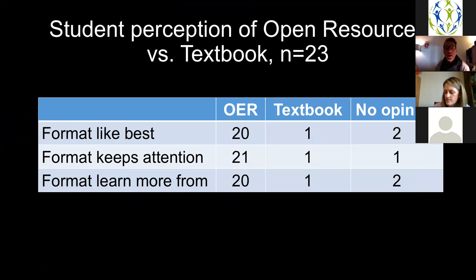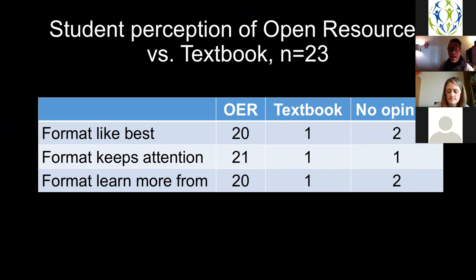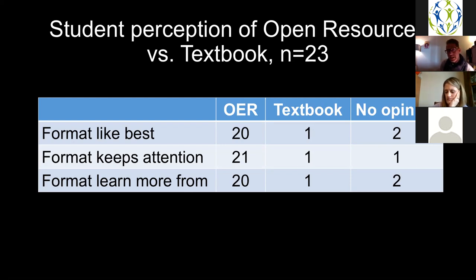I did a little formative assessment and asked students which version of the materials they liked best — the open resource version or the textbook version. About 23 students responded, and overwhelmingly they liked the OER format better. The mix of videos and readings kept their attention more and they felt they learned more from the OER format. It's a pretty overwhelming response. The literature right now on open resource effects on learning outcomes is just beginning, and a lot of it's focusing on learning outcomes but not really telling us how or why students are learning better from OER materials. This kind of information begins to get at that black box question.